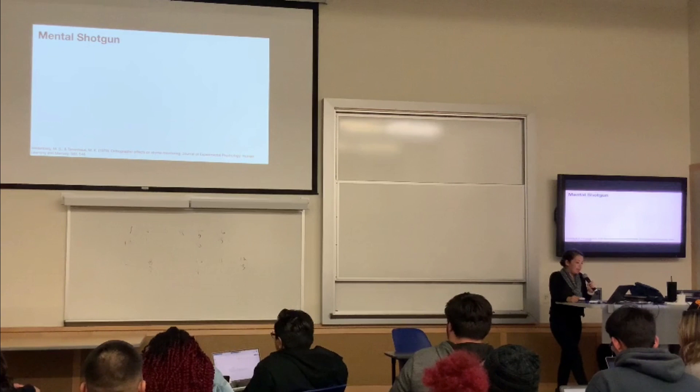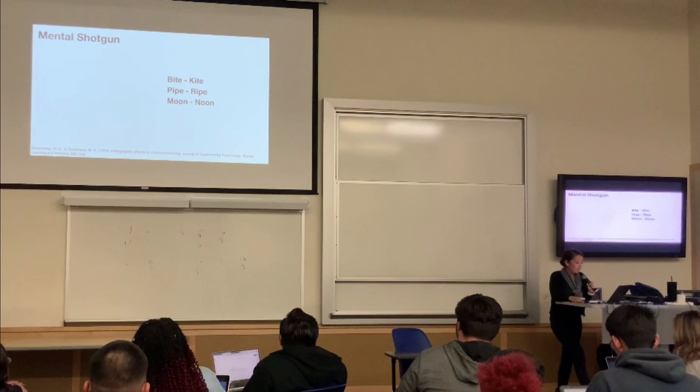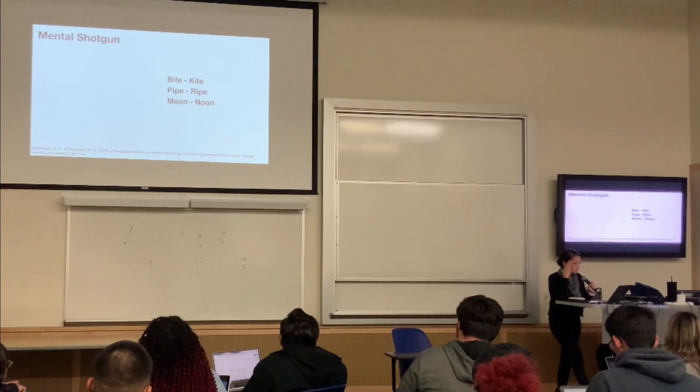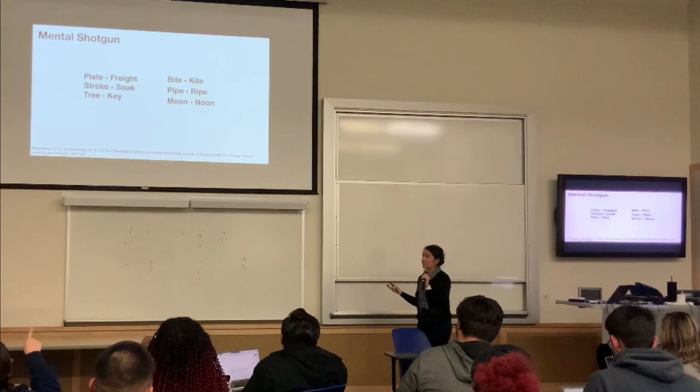The first list of words: bike, kite, hype, ripe, moon, noon. The second list: plate, freight, stroke, soak, tree, key. Which one was faster for you to interpret? The first one — and that's what the vast majority of research finds. You can kind of sense it because you feel it's more fluent to interpret information when things are spelled similarly compared to when they're not.